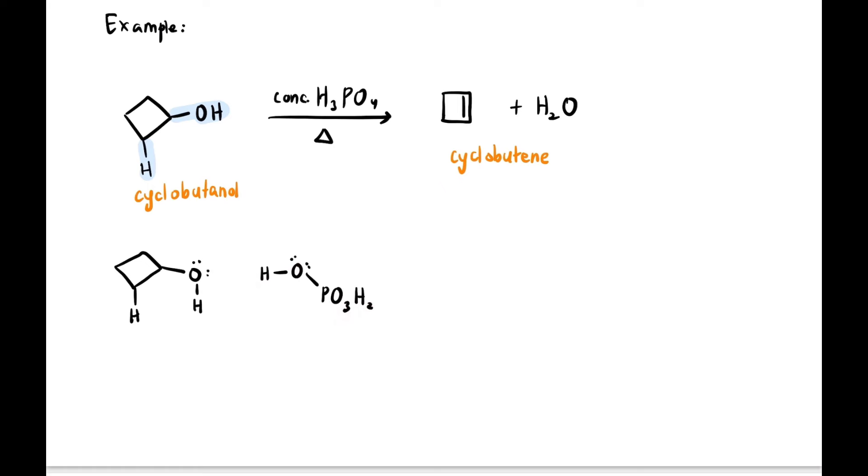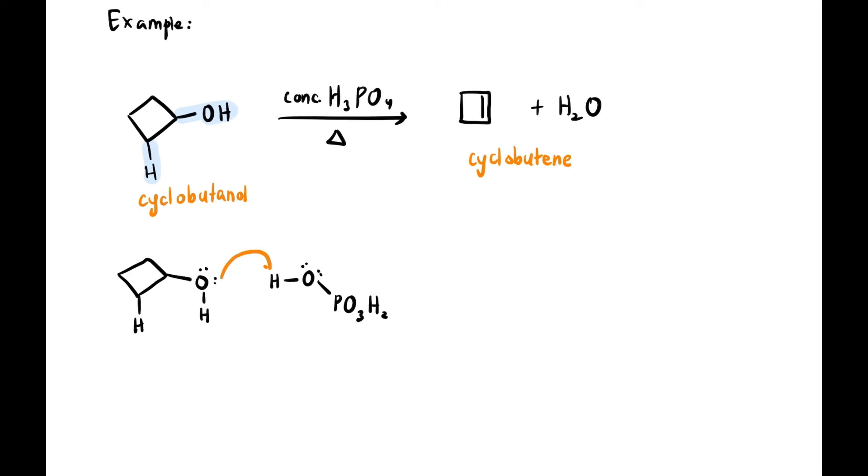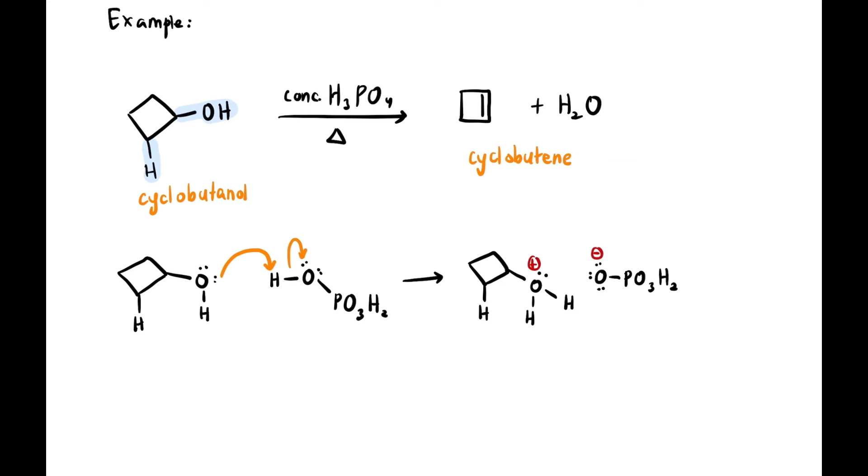We also expand its lone pairs - there are two. The first step is protonation, so this oxygen will attack the hydrogen. Remember, the lone pair attacks H. Then the other oxygen takes away its bond, so the new oxygen will have three bonds now - it already has two Hs. And the OPO will have three lone pairs. The one with three lone pairs is negatively charged, the one with three bonds is positively charged.